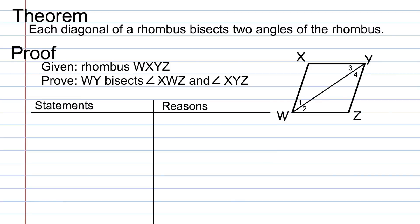We need to prove that segment W-Y bisects angle X-W-Z and angle X-Y-Z. The first part of any two-column proof is to write down the given. In this case, our given is that we have rhombus W-X-Y-Z, and we cite that down as our given.